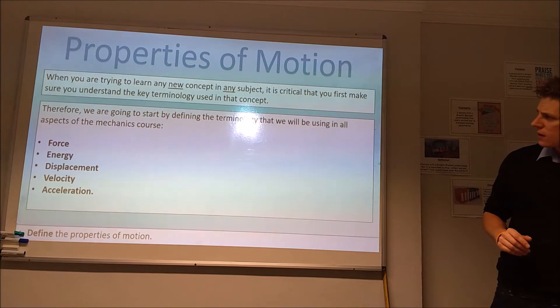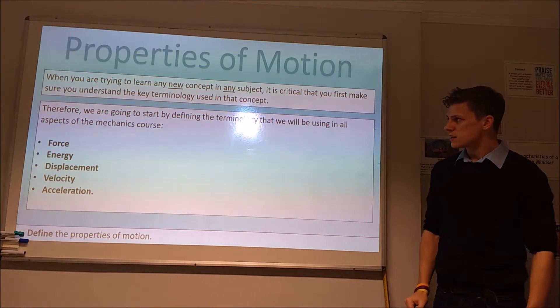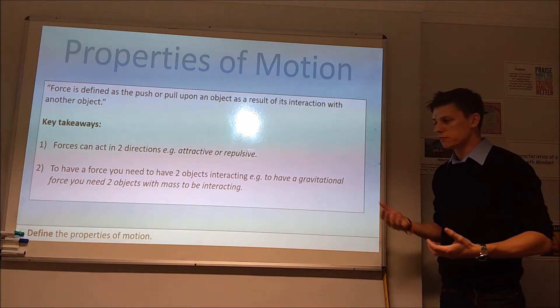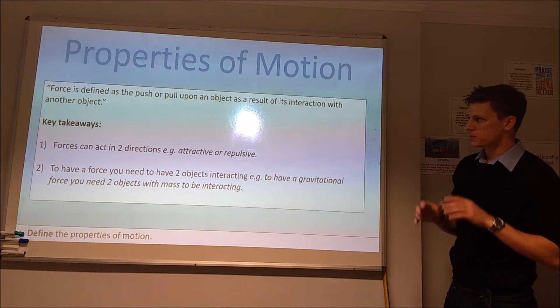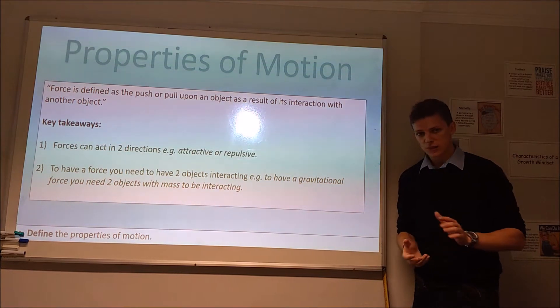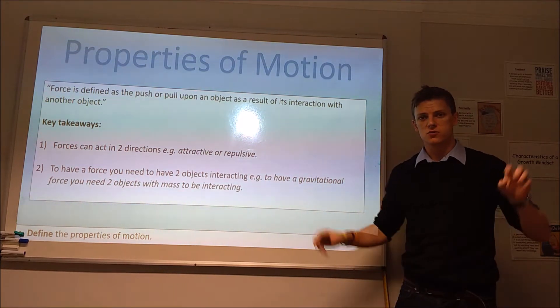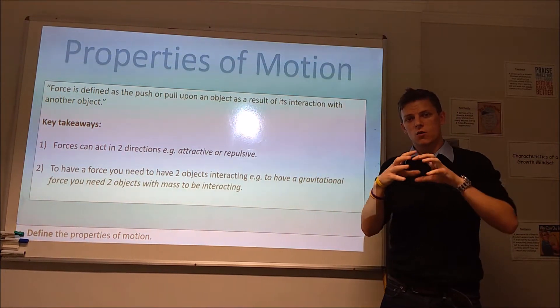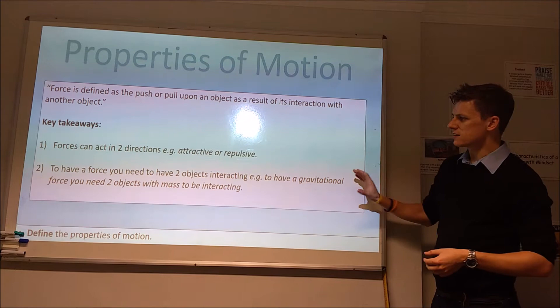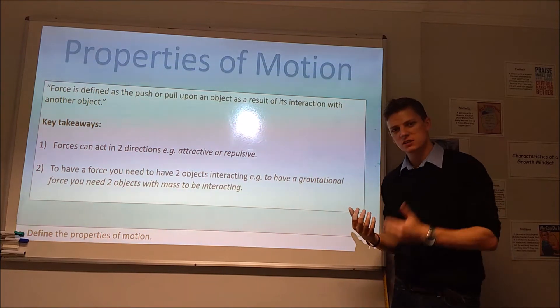Let's get cracking. The different properties of motion and the things that cause motion are these five you can see on the far side. Let's start off looking at force. In terms of defining what force is, force is defined as the push or pull experienced by an object as a result of its interaction with another object. There's two key takeaways from this. One, forces can act in two directions. You've got two objects, they can either pull each other together or push each other apart. Those are your two options with forces, but you can have both. The second key takeaway is you can't just have one object and a force act on that object. That force must come from something else.